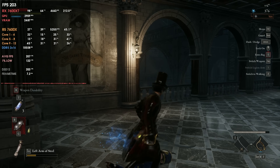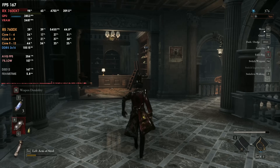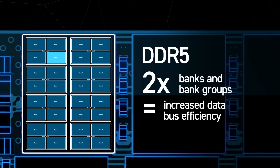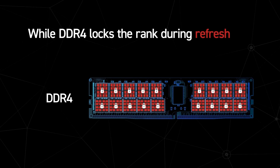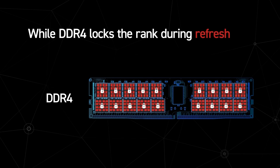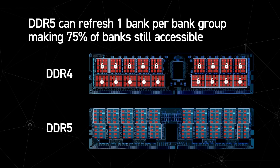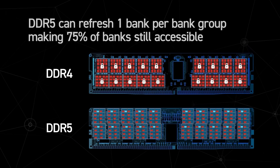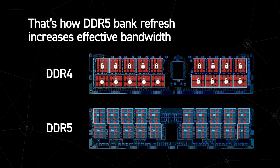With DDR5, if you're running two sticks of 16 gigabytes you're most likely running single rank, while two sticks of 32 gigabytes or four sticks of 16 gigabytes will provide dual rank. Having two ranks per channel usually delivered better performance with DDR4, while with DDR5 it seems that can vary.